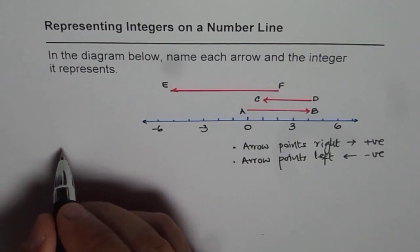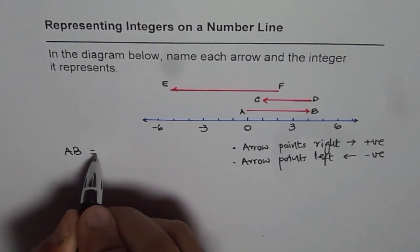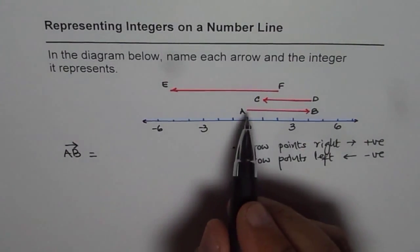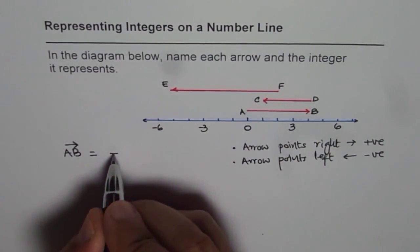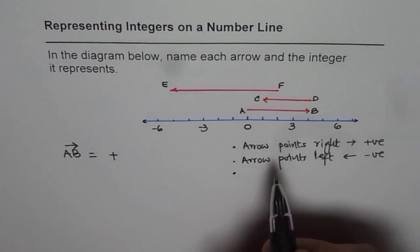For example, A B. So we can write integer A B as equal to, so it is from A to B. Now from A to B, it is pointing towards right. Therefore, it is positive.